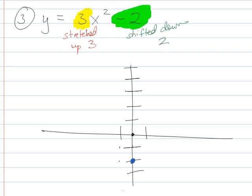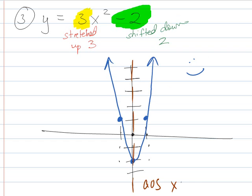And instead of going over one, up one, it goes over one, up one, two, three. Instead of going over one, up one, it's over one, up one, two, three. And this is my new, fancy parabola. And I'm happy. Axis of symmetry is x equals zero. And my new vertex is at zero, negative two.